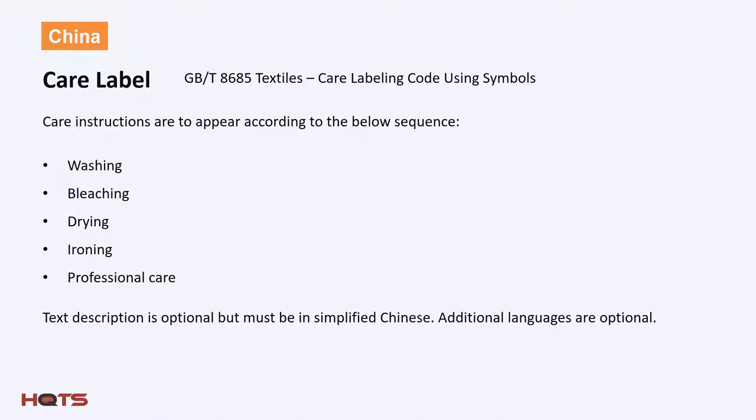The major standard for care labels of textiles and apparel in China is GB/T 8685. Care instructions are to appear in the following sequence: washing, bleaching, drying, ironing, and professional care. According to GB regulation, care labels must consist of symbols. If a text description is included, it must be in simplified Chinese text. Additional languages are optional.